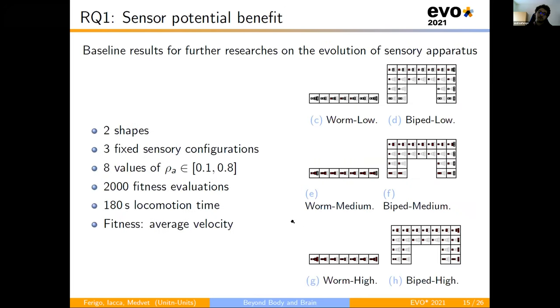So in order to answer the first question, we evolved two shapes: a worm, seven times one, and a biped, seven times four, with a total of 22 voxels, with prefix sensory configurations that differ for the number of sensors enabled. In the plus configurations, the sensors enabled are the ones on the line. Moreover, we test eight values of rho-A because we want to see how the strength of the voxel influences the locomotion. We measured the average velocity in a time window of three minutes over 2000 fitness evaluations.